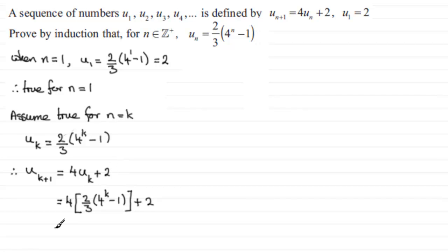So, if we multiply this out, 4 times 2/3 is going to give us 8/3. And then we've got 4 to the power k. So that takes care of the first bit there. Now we've got 4 times 2/3, which is 8/3 times the minus 1. So it's going to be minus 8/3. And then we've just got the plus 2 on the end.